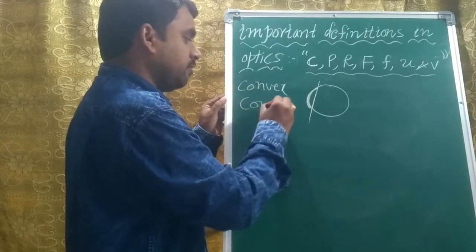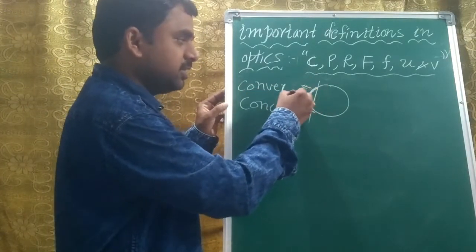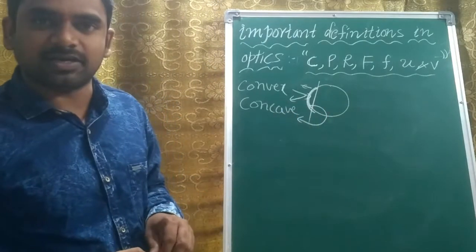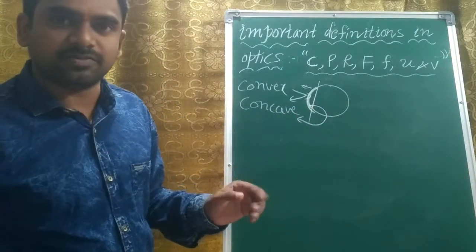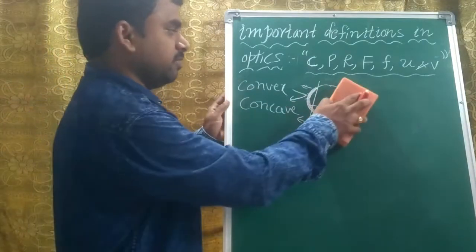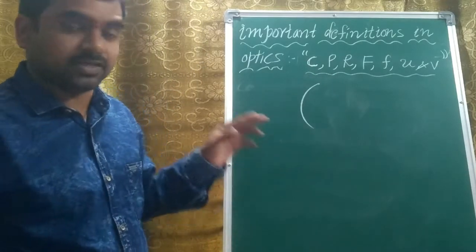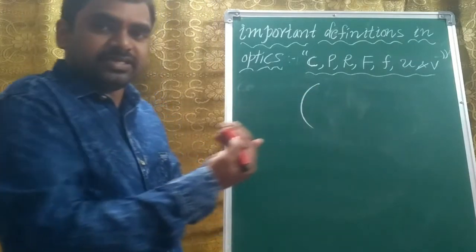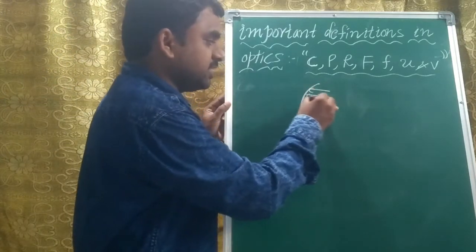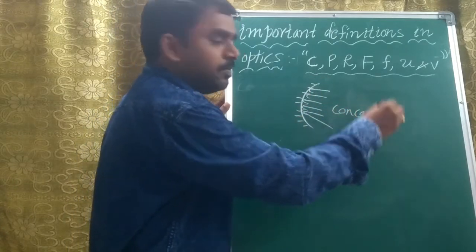For example, if the bulging surface is reflecting light, then we call that a convex mirror. Suppose if the inside surface is reflecting the light, then that is called concave. It's very simple — if you take a curved surface where the reflecting area goes inside, just like a cave we are entering, then it is called concave.